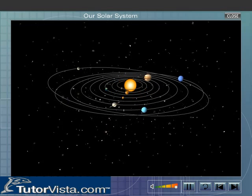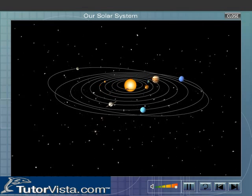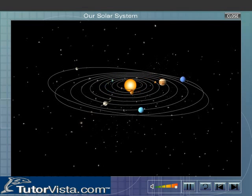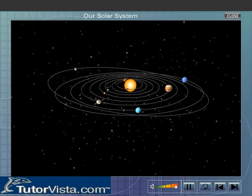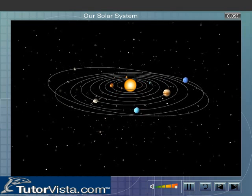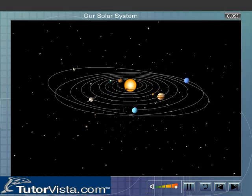The planets: Mercury, Venus, Earth, Mars, Jupiter, Saturn, Uranus, Neptune and Pluto. It includes more than 60 satellites of the planets.